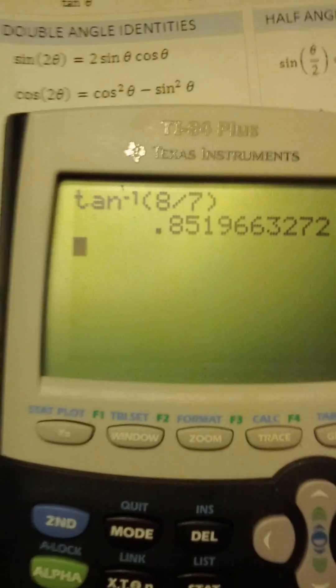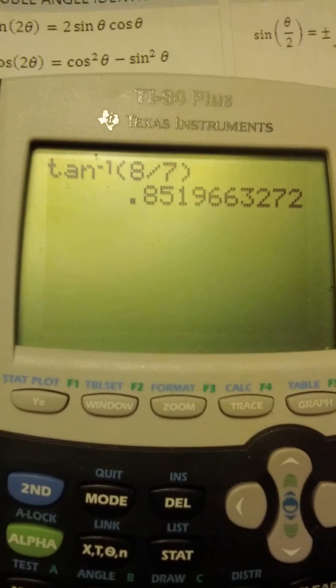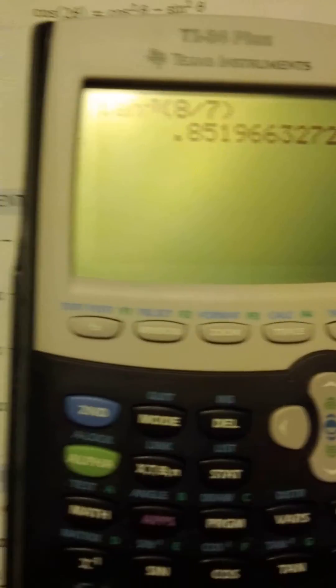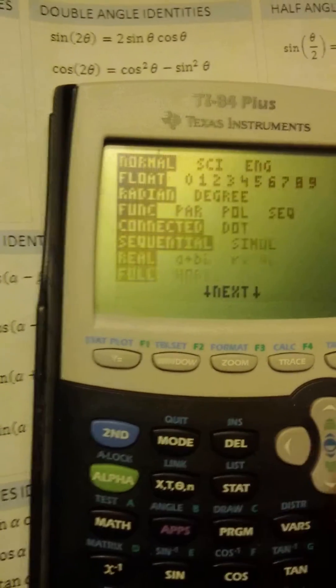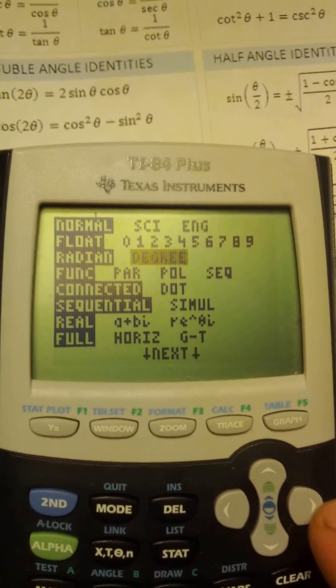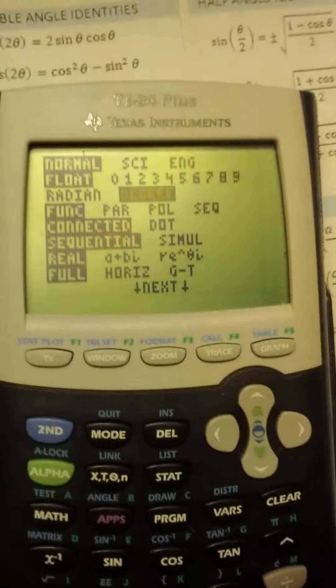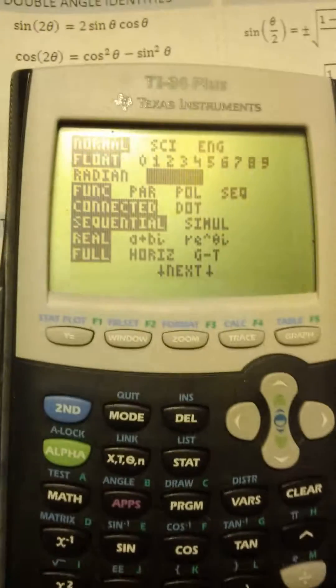Okay, it gives us that decimal we saw. Now why is that a decimal? Let's go to mode right here, and yes, I am in radians.